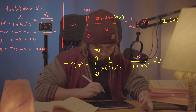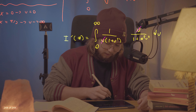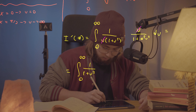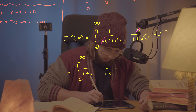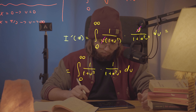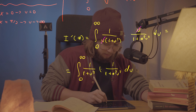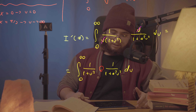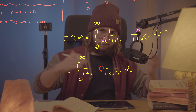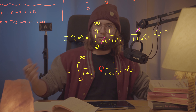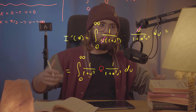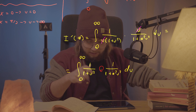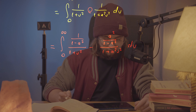The integral is convergent — arctangent is bounded between −π/2 and π/2, so no problem. Differentiating under the integral, the derivative of arctan(au) with respect to a is u/(1 + a²u²), and after the chain rule the u's cancel, leaving the integral from 0 to ∞ of 1/(1 + u²) times 1/(1 + a²u²) du.